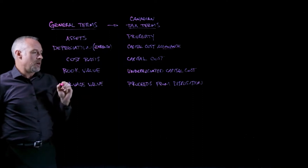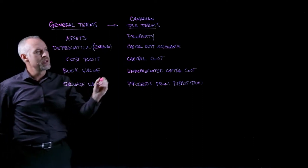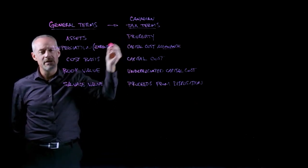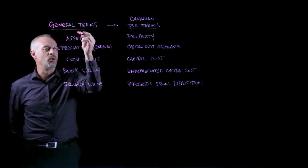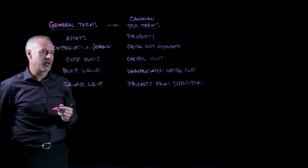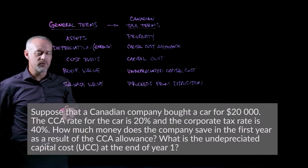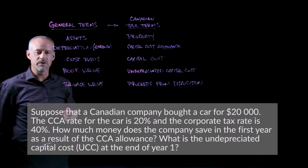The last term to discuss is salvage value, which in Canadian tax terms is referred to as proceeds from disposition. Take a moment to make sure you understand that each of these Canadian-specific tax terms maps to the general terms we've already talked about in the course. We'll now do a problem — pause the video, read the problem, and restart when you're ready to see the solution.